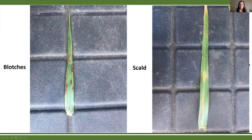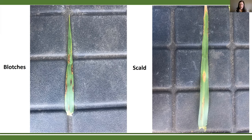There was also some scald observed in the plots. A characteristic symptom of scald is that the primary lesion in the center is not as dark as blotch lesions — more of a brown-gray color, often surrounded by a yellowing chlorotic region. Looking at the top of the leaf, you see grayish-brown necrotic regions, and the perimeter of those lesions gets really dark, forming a darker ring around the necrotic tissue. That's a good way to diagnose scald.